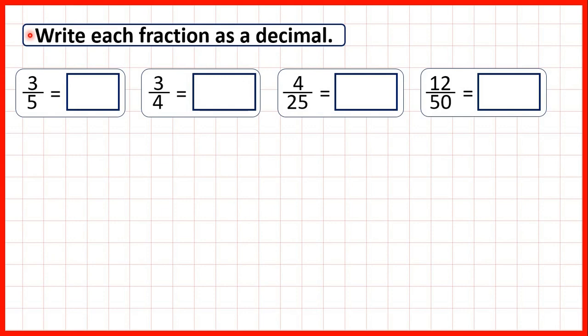We need to write each fraction as a decimal, and the way to do this is to remember that some fractions have decimal place values. The first digit after the decimal point is the tenths digit, and the second digit after the decimal point is the hundredths digit. So we can find equivalent fractions with a denominator of either ten or a hundred, because then we'll be able to write them as a decimal.